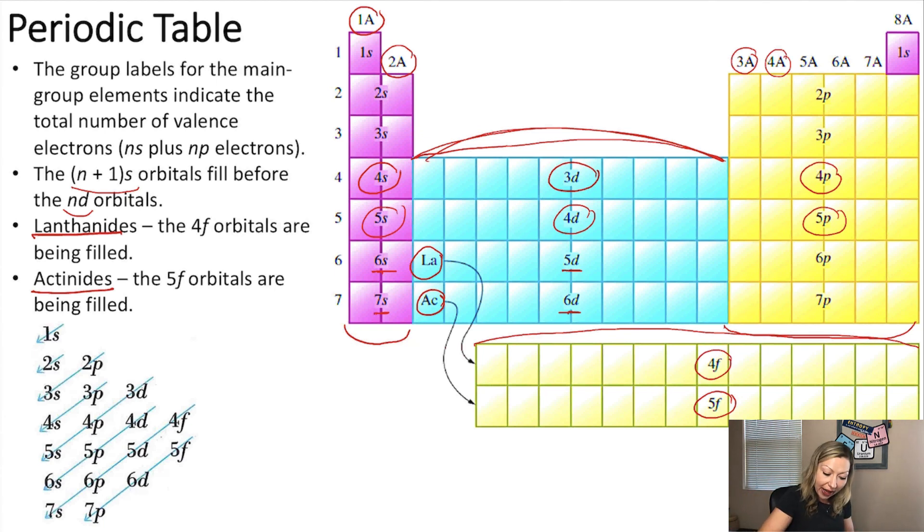One more thing. If you look at the periods, you are going to see that those numbers actually align with the principal quantum number n. When you are in the first period, you are filling up the 1s orbitals. In the second period, you are filling up the 2s and 2p orbitals. In the third period, the 3s and 3p orbitals. In the fourth period, be careful, the 4s, the 3d, and the 4p orbitals.